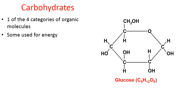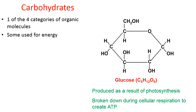When it comes to carbohydrates, some of them are used for energy purposes. For instance, glucose — there's the chemical structure of glucose in the picture. Glucose is produced as a result of photosynthesis, and it's then broken down during cellular respiration in order to make adenosine triphosphate, ATP, the energy molecule of our cells.